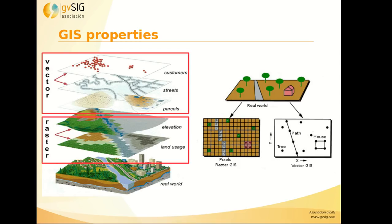In GIS we have two different types of data: vector data and raster data. We use vector for features like customers, streets, and parcels, and raster data for land use, etc.